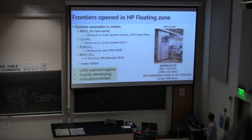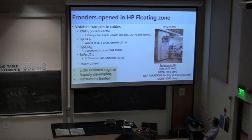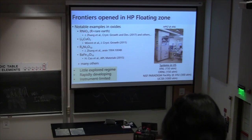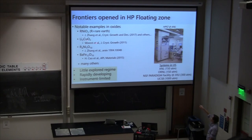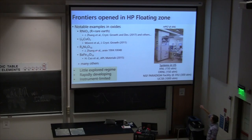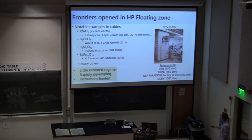There are already many frontiers being opened in high pressure floating zone. Notable examples in oxides include rare earth nickelates, which are of broad interest because of reports of high temperature superconductivity — these need to be grown under high pressure oxygen with floating zone. Another example is Li2CuO2, a quantum spin chain system with interesting Zhang-Rice singlet physics. Here's another rare earth nickelate from John Mitchell's group where the idea is trying to stabilize unconventional superconductivity. And there's the quantum pyroelectric material that Brian mentioned from Oak Ridge. High pressure floating zone installations in the U.S. include one at Argonne National Lab at 150 atmospheres and one at Johns Hopkins University under the NSF Paradigm Facility, which can go to 300 atmospheres. Both are manufactured by Scientific Instruments of Dresden.